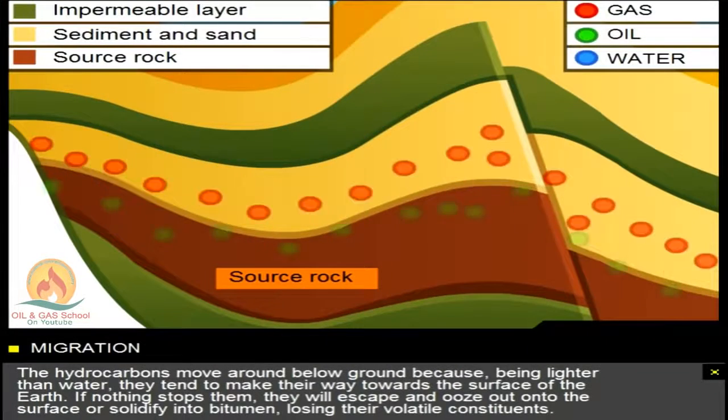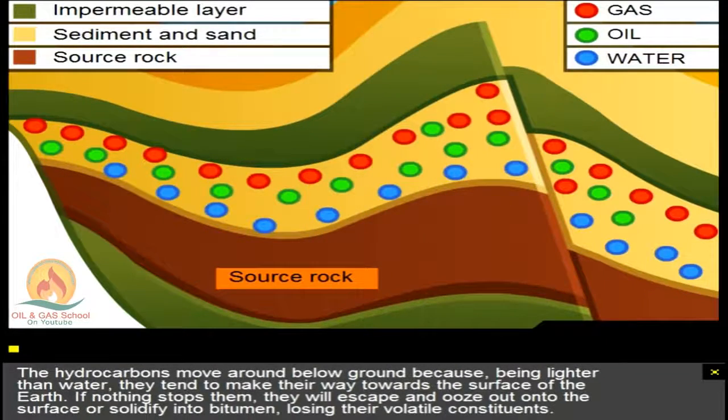The hydrocarbons move around below ground because, being lighter than water, they tend to make their way towards the surface of the Earth. If nothing stops them, they will escape and ooze out onto the surface or solidify into bitumen, losing their volatile constituents.